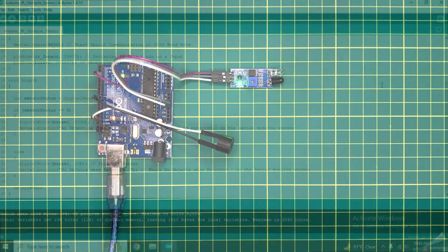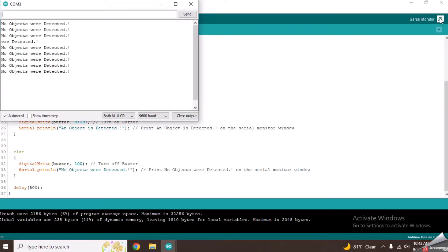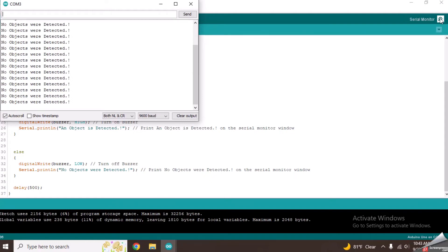At the same time, open the serial monitor and observe the text on it. It also shows the relevant state of the sensor.